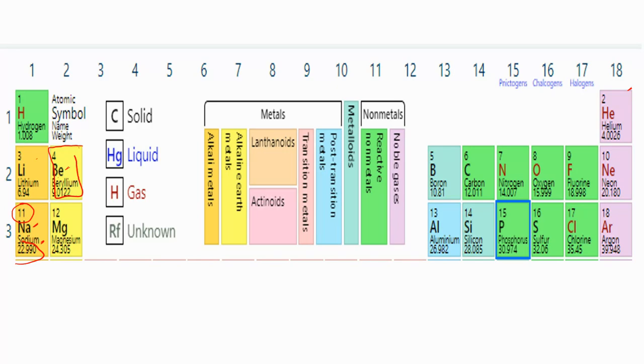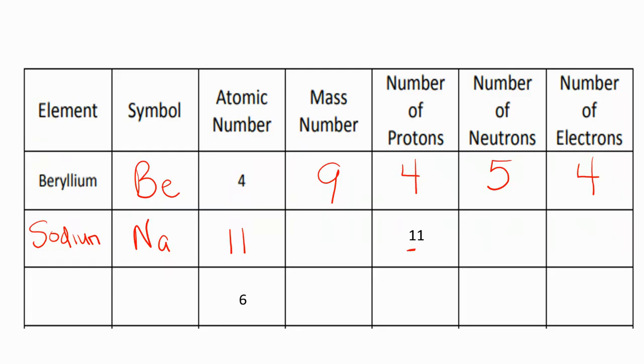The mass number is 22.99, which I can round up to 23. And I'm going to take 23 and subtract 11 in order to figure out my neutrons, and my neutrons are going to be 12. And the number of electrons have to equal the number of protons in order for it to have a zero charge. So that number is going to be 11.